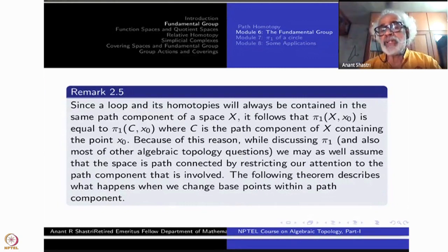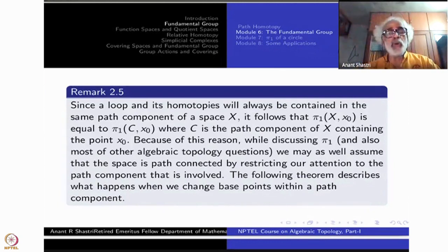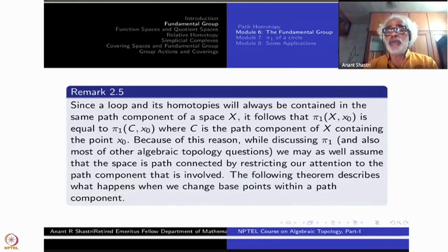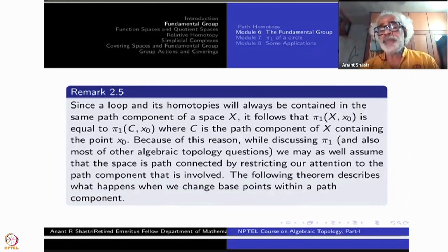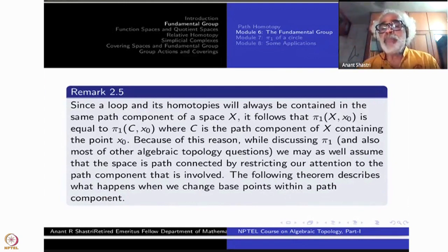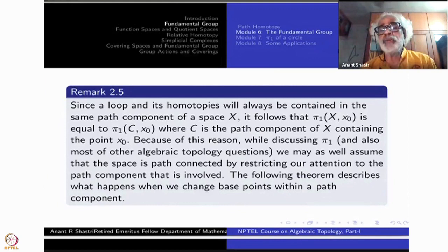A loop will never go out of a single path component — wherever it starts, it remains in that component. In algebraic topology it is customary to assume that a space is path connected, for the reason that each path component can be studied first and then put together to get the study of the whole space, since a space is always divided into its path components.